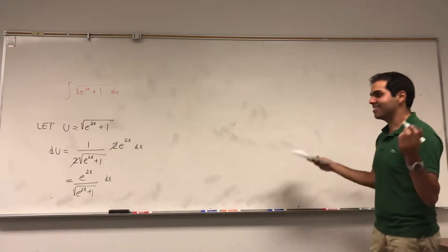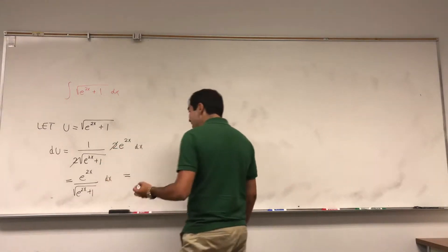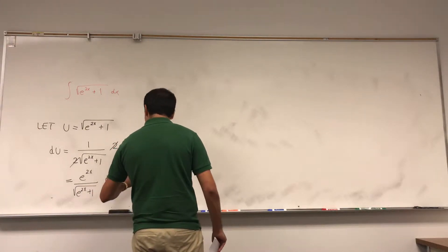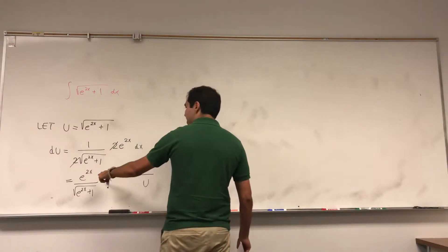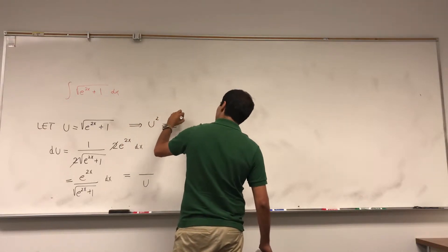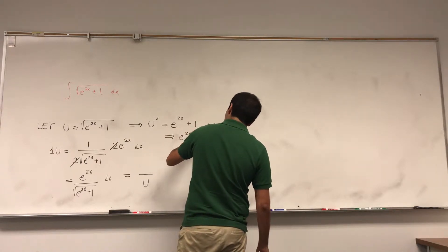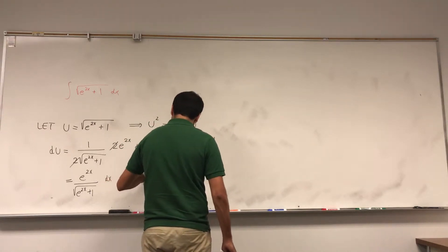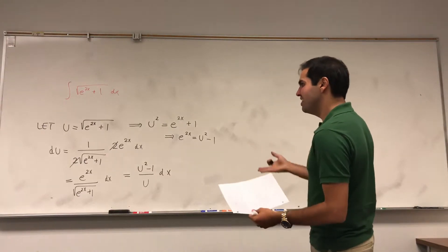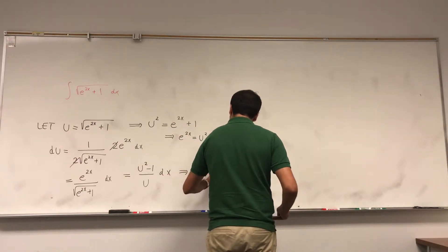Okay, now it depends on x. Ideally we want something with u's, because you know, never mix x's and u's. But it turns out you can easily rewrite this, because notice the denominator has square root of e to the 2x plus 1, which is u. And the question is, what is e to the 2x? Well, square this out: u squared is e to the 2x plus 1, so e to the 2x is u squared minus 1. So du is u squared minus 1 over u dx, and so dx becomes u over u squared minus 1 du.